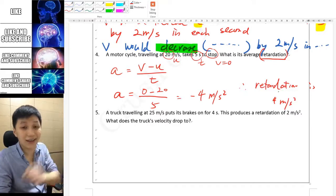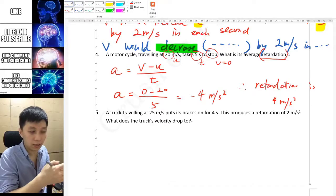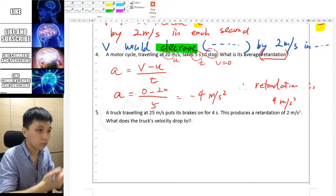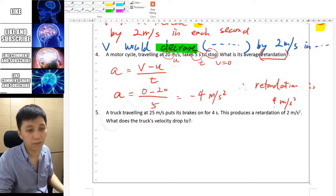By the way, you can't leave this as an answer because it's asking you retardation, not acceleration. So you should say therefore retardation is 4 meters per second squared. You can't say negative because when you say retardation or deceleration is negative, then it is a double negative, meaning it is accelerating, which is not true. In this case you have to put retardation is positive 4 meters per second squared.